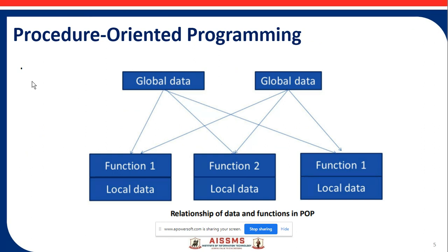What is process-oriented programming? Here we can see the relationship of data and functions in POP. Global data sets are connected with functions — function 1, function 2, and function 3 — and they are connected with each other. The global data is connected to the functions along with their related local data.